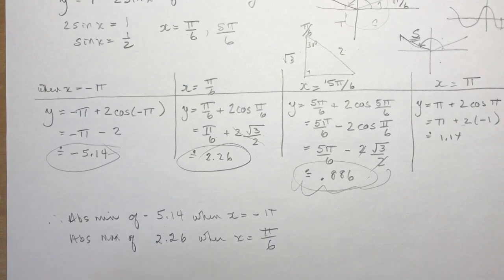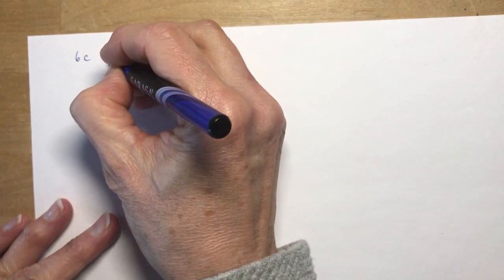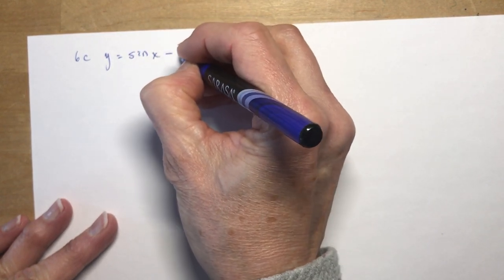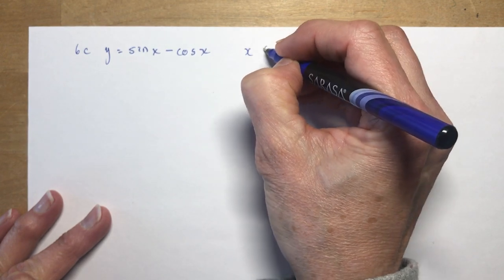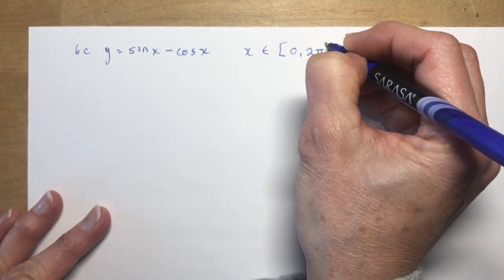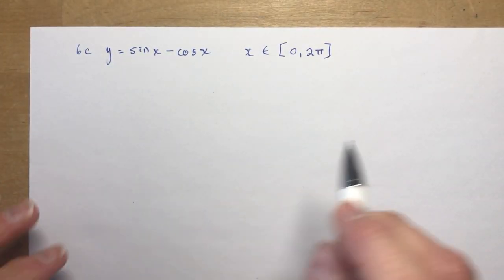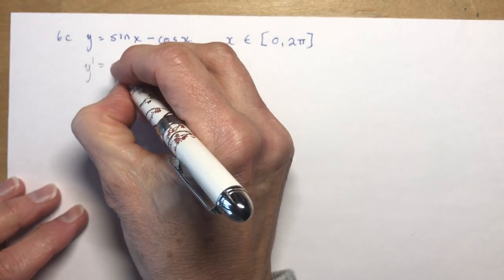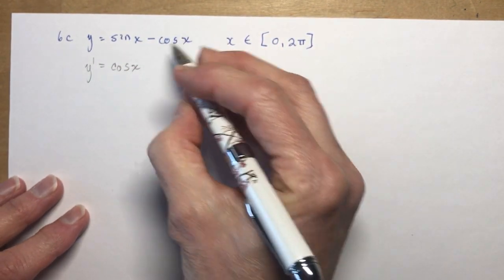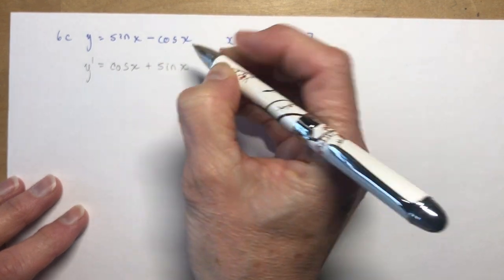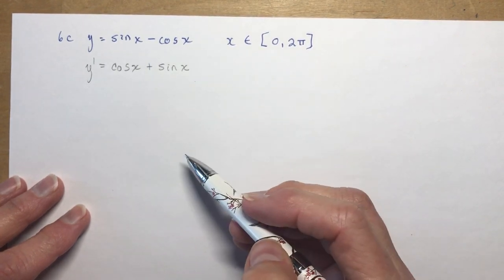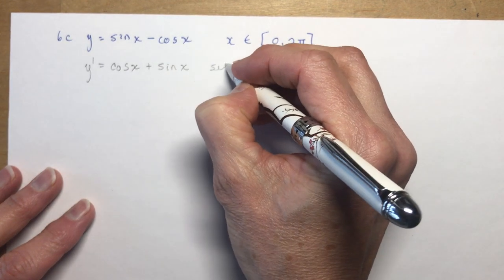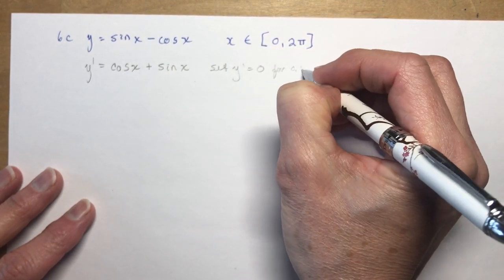I've got one more to do and that's Problem C, then I'll let you try the other on your own. Problem C: y equals sin x minus cos x, with domain x between 0 and 2π. Always check the domain. Finding extrema, we need the derivative: y prime — derivative of sin x is cos x, and derivative of negative cos x is plus sin x, because cos gives negative sign, so negative negative gives positive.